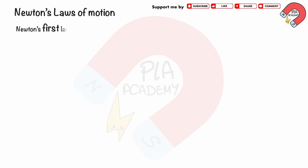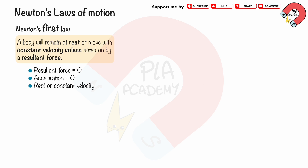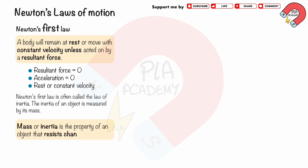Newton's First Law of Motion states that a body will remain at rest or move with constant velocity unless acted on by a resultant force. We can conclude that if there is no resultant force, there is no acceleration, causing the object to be at rest or at constant velocity. Newton's First Law is often called the Law of Inertia. The inertia of an object is measured by its mass — mass or inertia is the property of an object that resists change in motion.